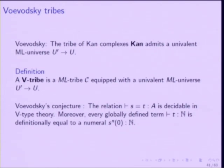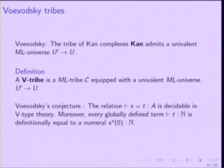Voevodsky proved that the tribe of Kan complexes—which is a Martin-Löf tribe with Kan complexes and Kan fibrations—admits an incompressible or univalent Martin-Löf universe. So there is a universal Kan fibration; once you define what you mean by small, there is a universal Kan fibration, and if you ask that it is univalent then it is homotopy unique. A Voevodsky tribe is a Martin-Löf tribe equipped with a univalent Martin-Löf universe.